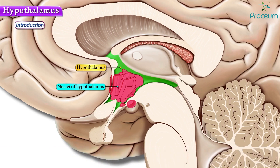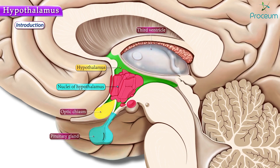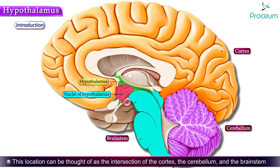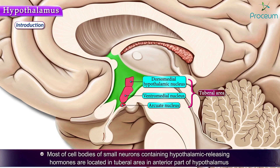The hypothalamus is located at the base of the brain, below the third ventricle and just above the optic chiasm and pituitary gland. This location can be thought of as the intersection of the cortex, the cerebellum, and the brainstem. Most of the cell bodies of the small neurons containing hypothalamic releasing hormones are located in the tuberal area in the anterior part of the hypothalamus.